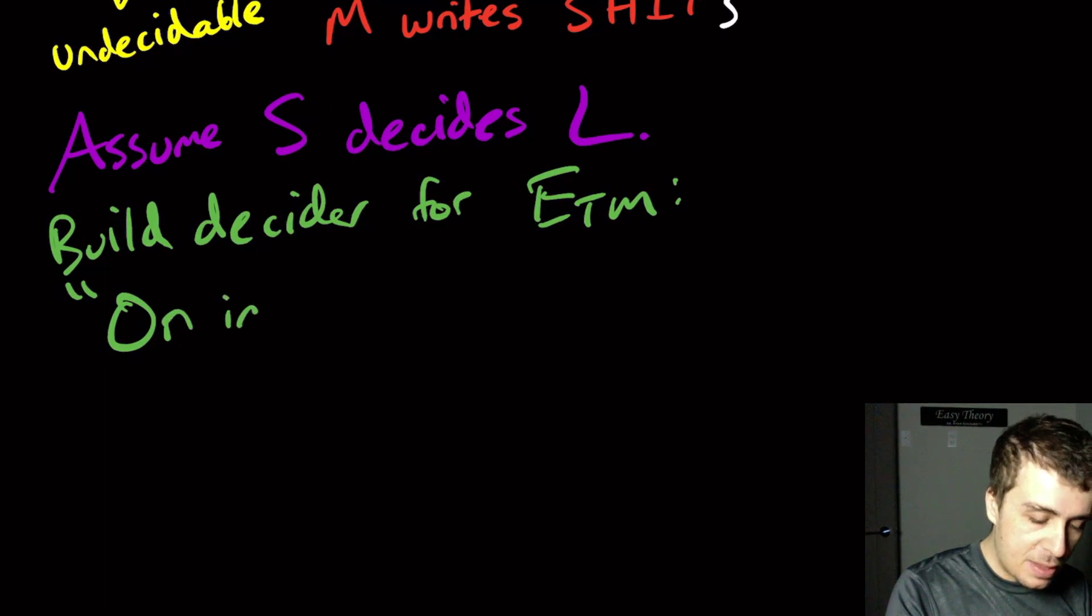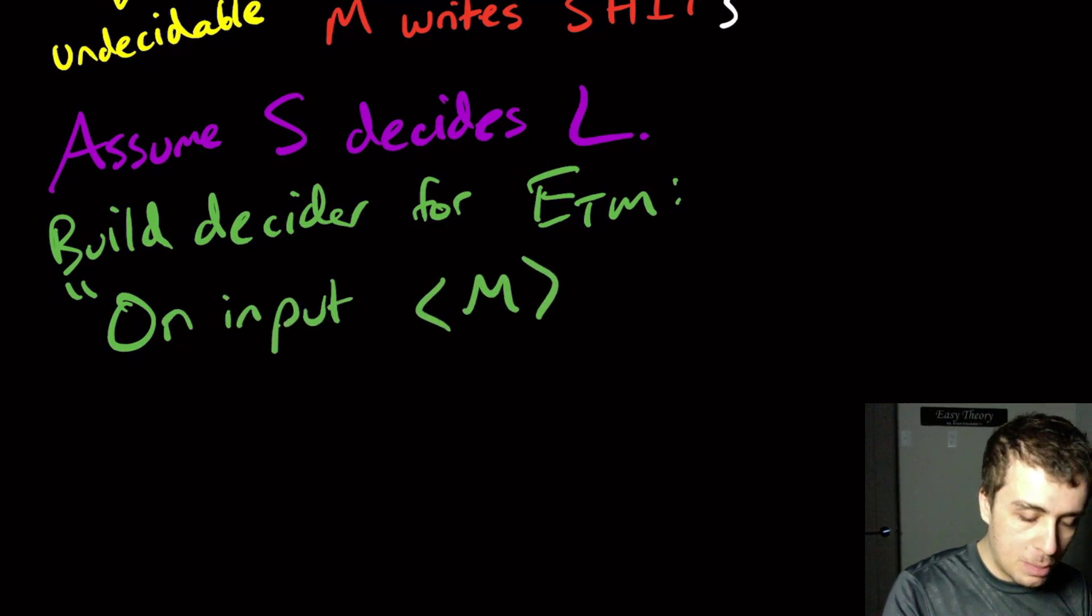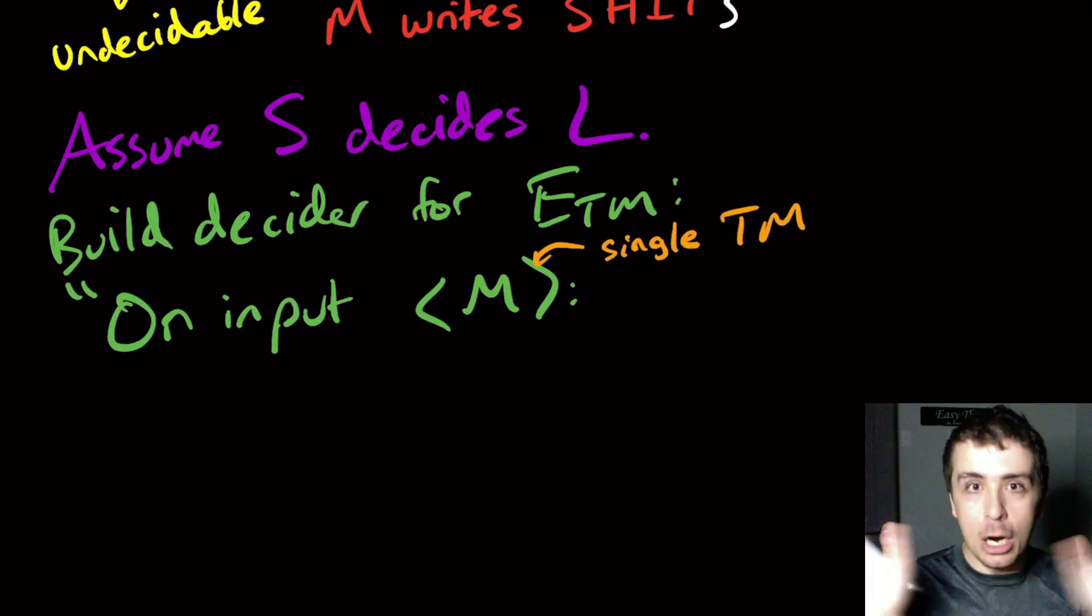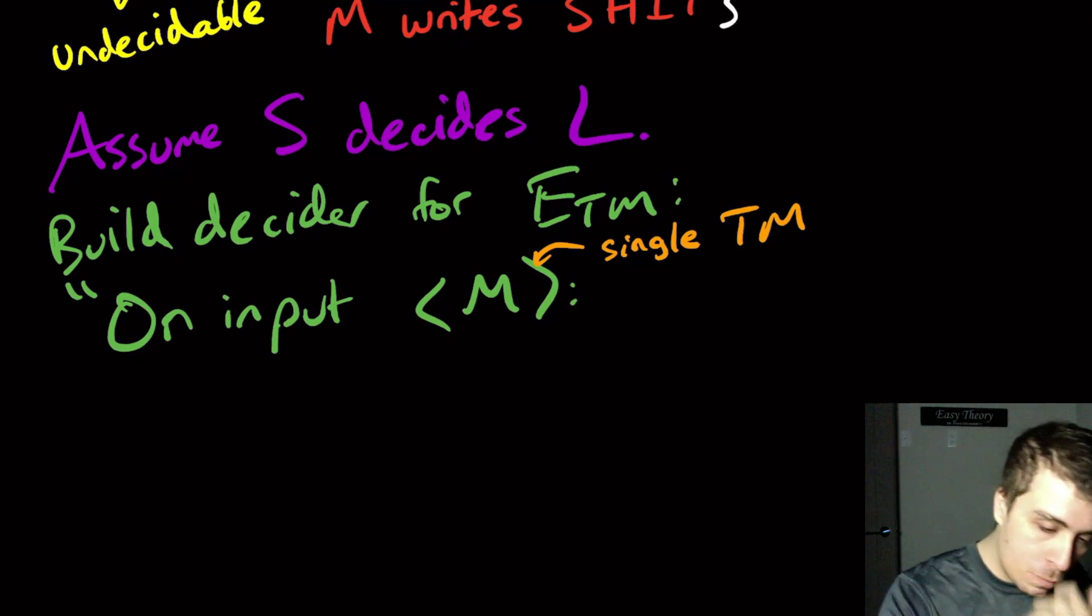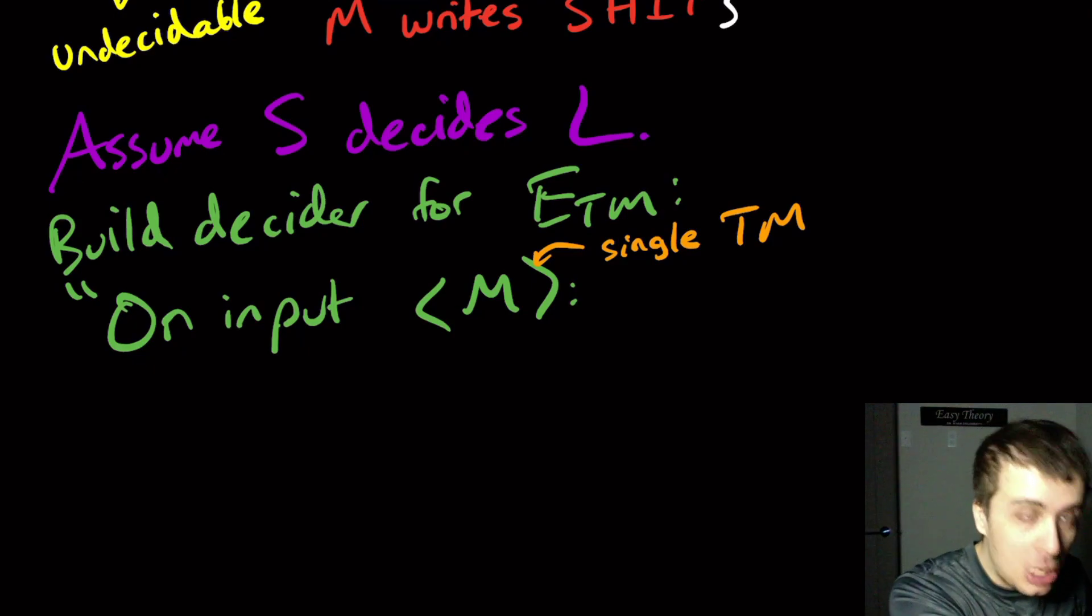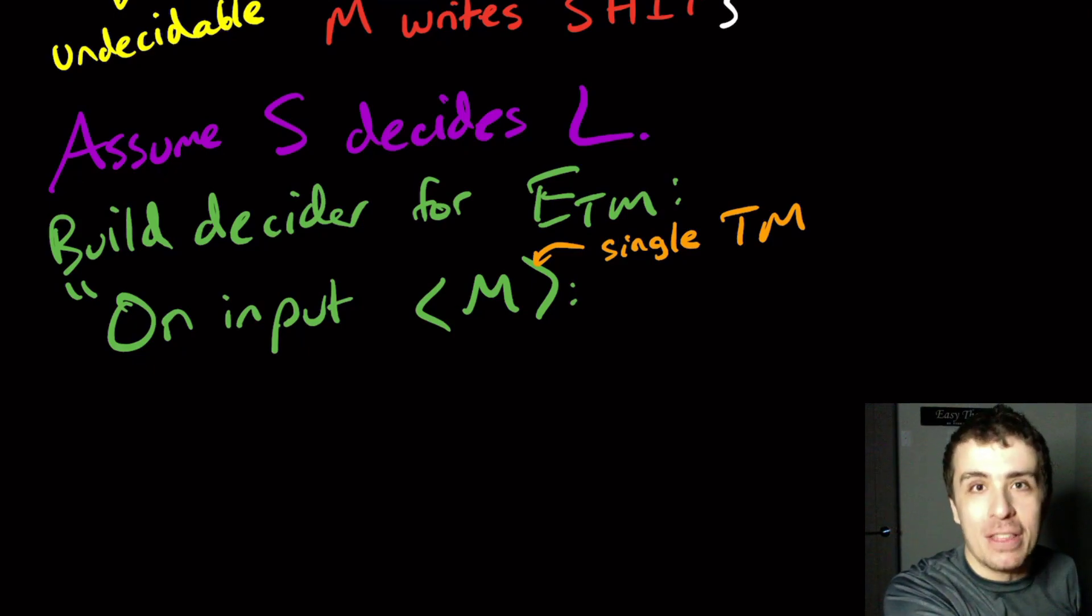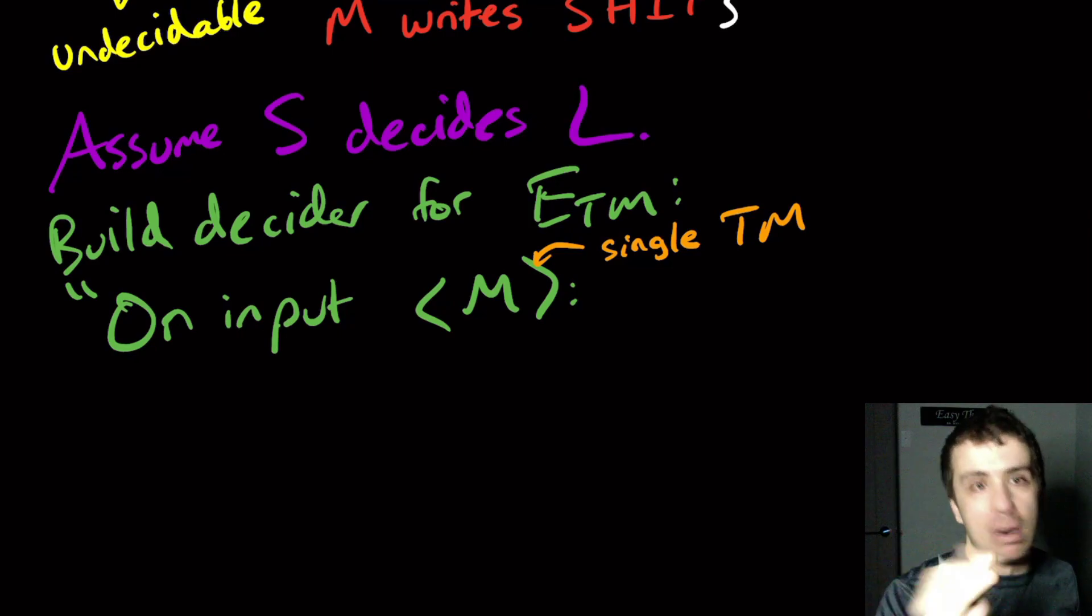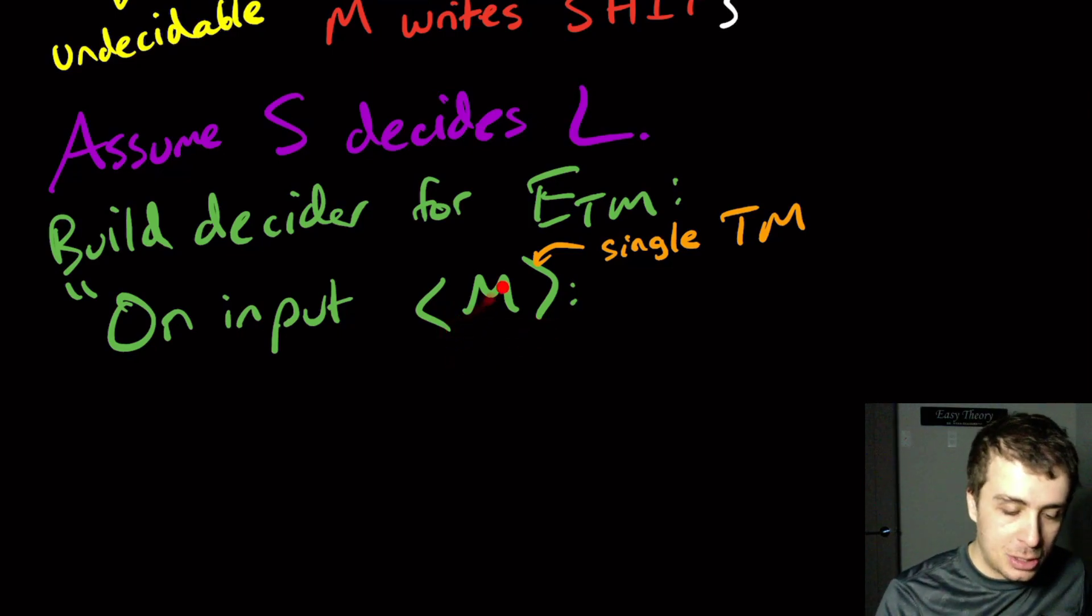Remember that the emptiness problem is going to be given a single Turing machine. This thing right here is a single Turing machine. It's completely arbitrary. If we feed M into this supposed decider S, it could tell us whether it writes the word ship or not. But that doesn't mean anything about the strings that M accepts. It might write the word ship, but it still might reject everything. So that doesn't tell us whether its language is empty.